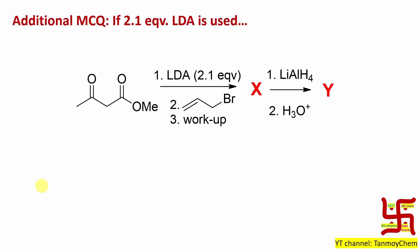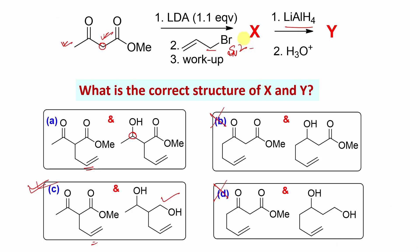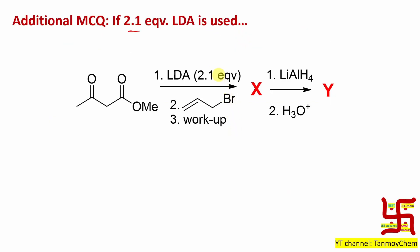Now let's go to an additional point. If 2.1 equivalents of LDA are used, what will be the situation? Remember 2.1 equivalents — previously we used 1.1 equivalents. Why this extra amount? Remember, LDA is actually a hygroscopic molecule. If any moisture is present in the reaction medium, it can react with LDA and destroy the reagent — diisopropyl amine will be produced, which is a wastage of reagent. So to prevent that wastage, a slight excess of reagent is taken. When you do such reactions, an anhydrous environment — anhydrous solvent, moisture-free gas like nitrogen — is needed. That's why a slight extra amount is taken, so that complete conversion can be obtained.